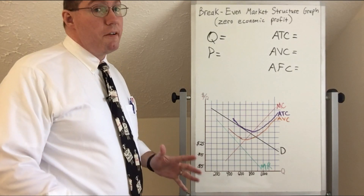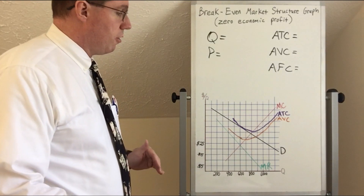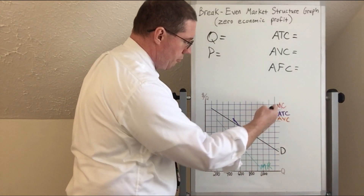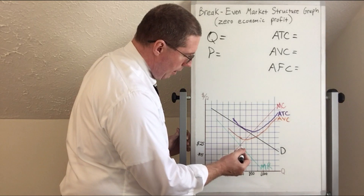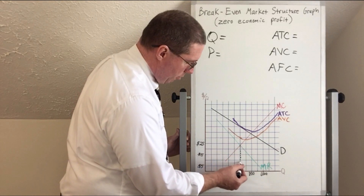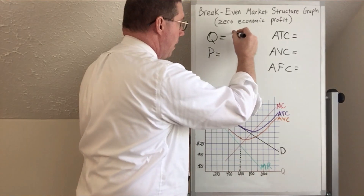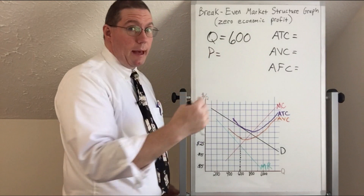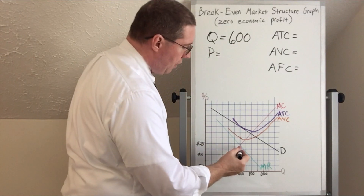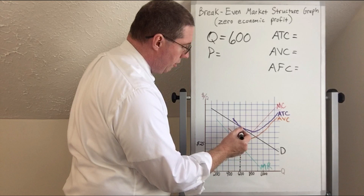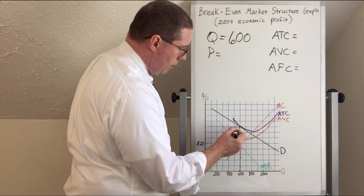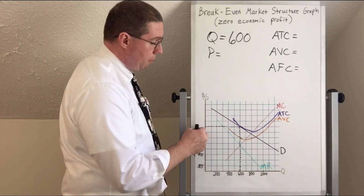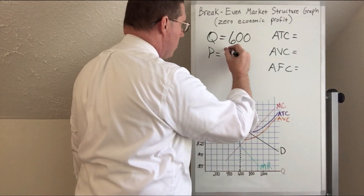The profit-maximizing quantity is where the marginal revenue curve intersects the marginal cost curve. They intersect right here, and going down, the quantity is 600. So the profit-maximizing quantity is 600 units. To find the profit-maximizing price, we follow that quantity up to the demand curve and read across: 5, 10, 15, 20, 25, 30, 35, 40. So the profit-maximizing price is $40.